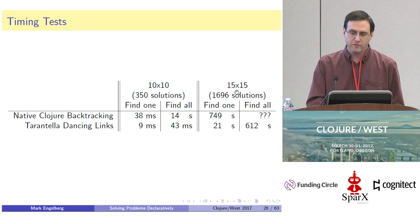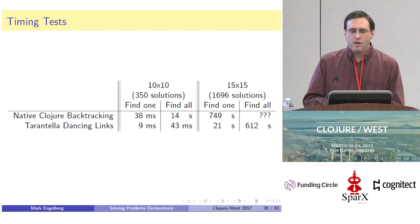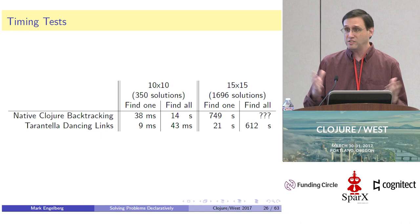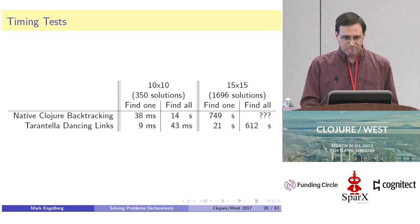We also see a huge performance difference, especially on the 15 by 15 grid. For finding all solutions, on my computer the Dancing Links algorithm took about 10 minutes. For the Clojure backtracking strategy, I let it run overnight — about 24 hours — and it still wasn't done. I gave up at that point.